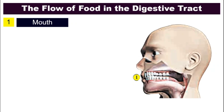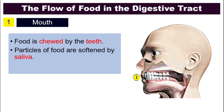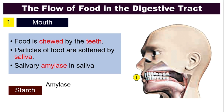First, food will enter our body through our mouth. Digestion actually begins in the mouth. Number one: food is chewed by our teeth — that is physical digestion, breaking it down into smaller particles. The particles of food are softened by saliva. In our saliva, there is a type of enzyme called amylase — that is chemical digestion. Amylase will digest any form of starch in the food into maltose. So digestion of starch already begins in your mouth.